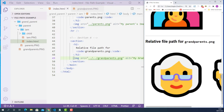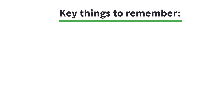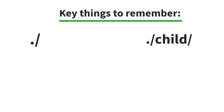Now let's recall and list all the key things to remember when specifying the relative file path. Dot forward slash means current folder — use this when the file is in the same folder. Dot forward slash, child forward slash means go into the child folder. Dot dot forward slash means go one level up to the parent folder. Dot dot forward slash dot dot forward slash means go two levels up to the grandparent folder.